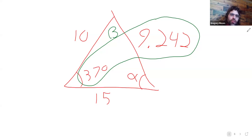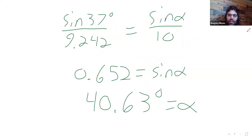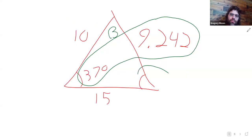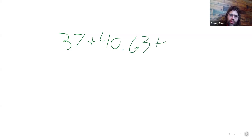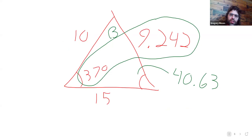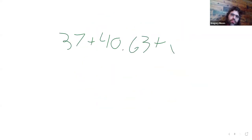So, once we know that this angle is 40.63, let's see. 37 plus 40.63 plus beta.